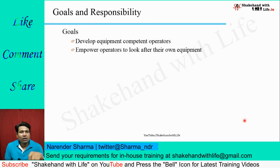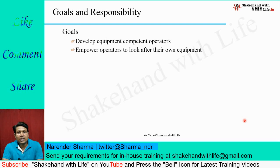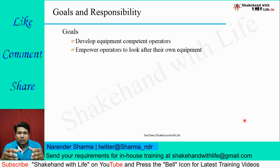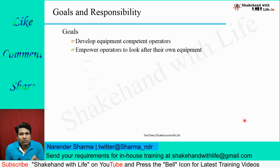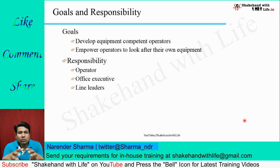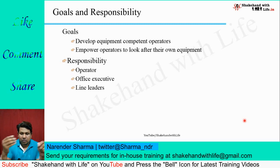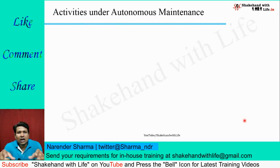The goals of autonomous maintenance are to develop equipment-competent operators — making them so competent that they can take care of their equipment by themselves — and to empower the operator to look after their own equipment. This implies the organization treats the operator as the owner of the equipment. Responsibility can be shared by operators, office executives, and line leaders.